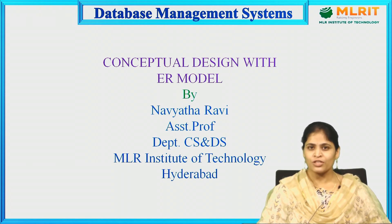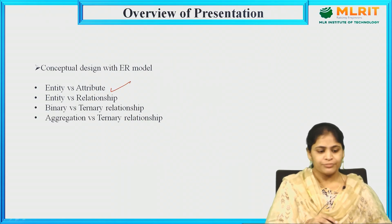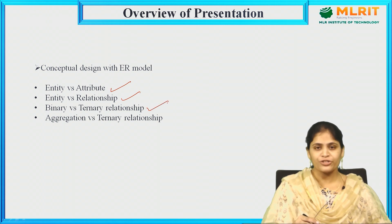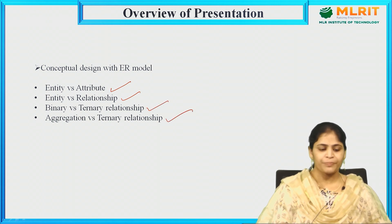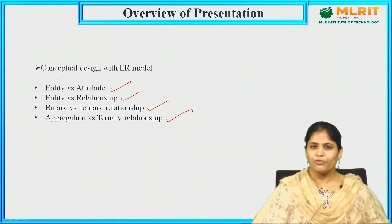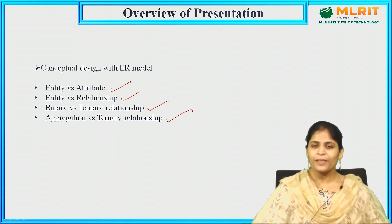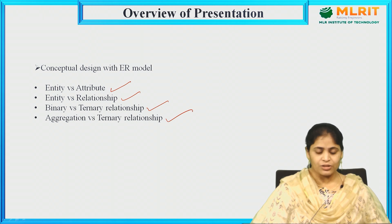The overview of this concept includes entity versus attribute, entity versus relationship, binary versus ternary relationship, and aggregation versus ternary relationship. Before going into this concept, we need to be thorough about what is entity, what is attribute, and what are the types of relationships — all of which were discussed in the previous sessions.